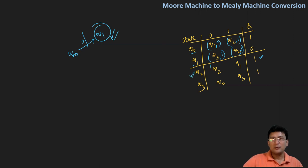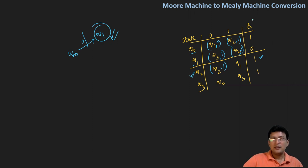For q2: q2 moves to q2 on zero, and the output associated with q2 is one, so one is attached to this transition. Then q2 moves to q1 on taking one, so the output associated with this is zero. Then starting with q3: q3 moves to q0 by taking symbol zero, and the output associated with q0 is one, so we attach one to this transition. Q3 remains at itself on one, and that output is also associated with this transition.